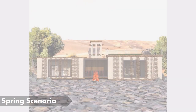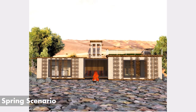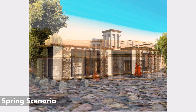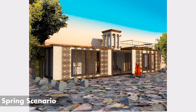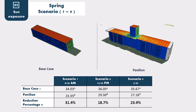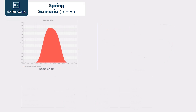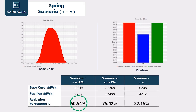For the spring scenario, we used moderate techniques. We kept the Burjeel to maintain cool airflow inside, kept Mashrabia panels apart when sun is needed and moved them closer to block it, and the east shading device moved inward following our shading study. For sun exposure, we managed to reduce air temperature by 31% in Scenario 7, 18.7% in Scenario 8, and 23.9% in Scenario 9. Solar gain was reduced to less than 50% in Scenario 7, 75% in Scenario 8, and 32% in Scenario 9.